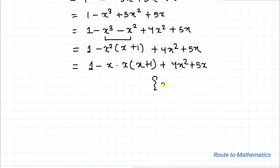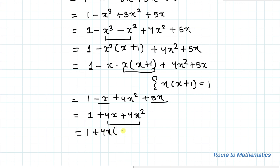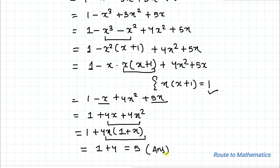From equation 2, x·(x + 1) = 1, so x²·(x + 1) simplifies. Substituting, we get 1 − x + 4x² + 5x, which equals 1 + 4x² + 4x. Taking 4x common gives 1 + 4x·(1 + x). Again, x·(1 + x) = 1, so this becomes 1 + 4 = 5. The value of this rational expression is 5.